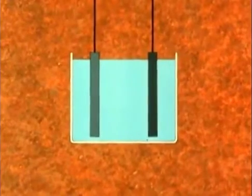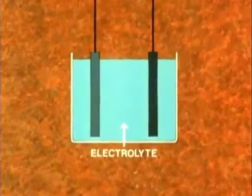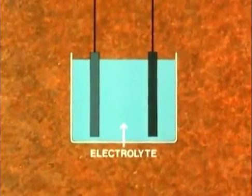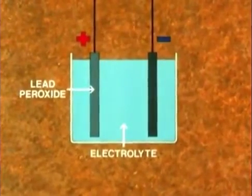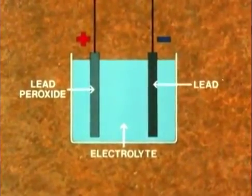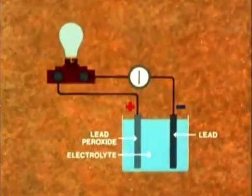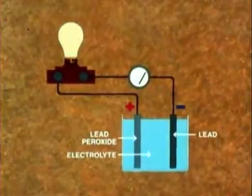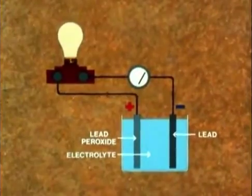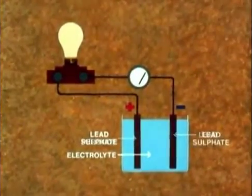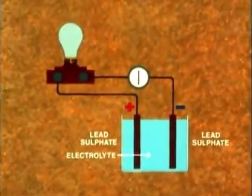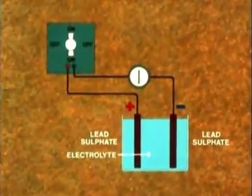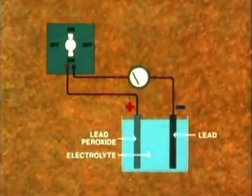This is how a secondary cell works. We have sulfuric acid and distilled water, still called the electrolyte, but the plates are different. The positive plate is lead peroxide, and the negative plate is lead. As the cell discharges, the acid gets weaker, and both plates change into the chemical lead sulfate. However, on connecting the cell to a source of electricity, it can be recharged, and the electrolyte and plates return to their original composition.